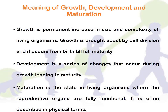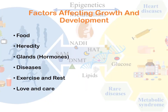We'll be looking at the meaning of the terms growth, development, and maturation. Growth is the permanent increase in size of living organisms; it happens because of cell division and occurs from birth to full maturity. Development is a series of changes that occur during growth leading to maturity, while maturation is a state where the reproductive organs are fully functional, described in physical terms.